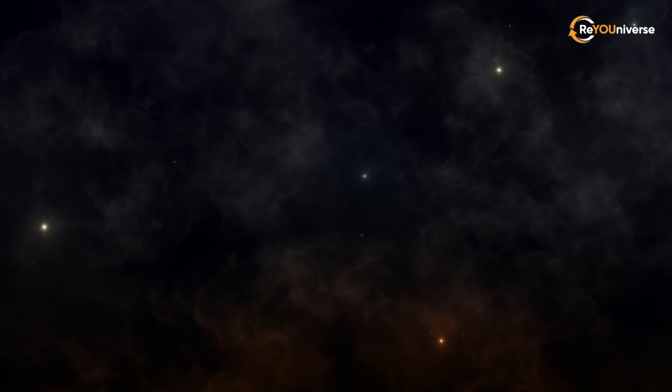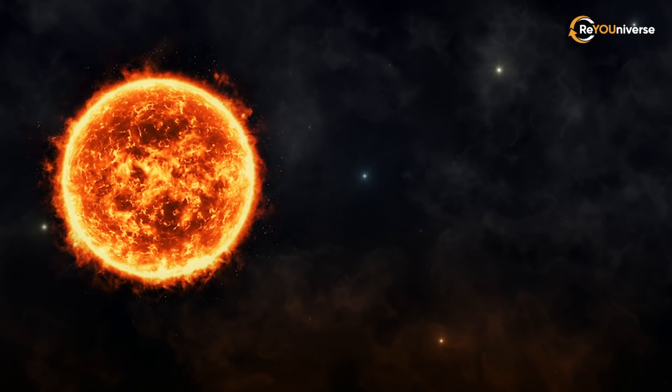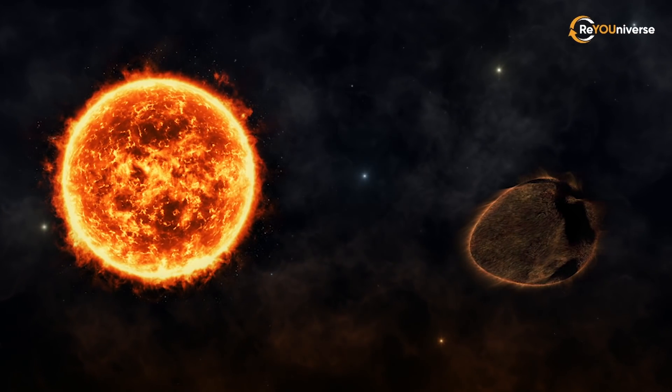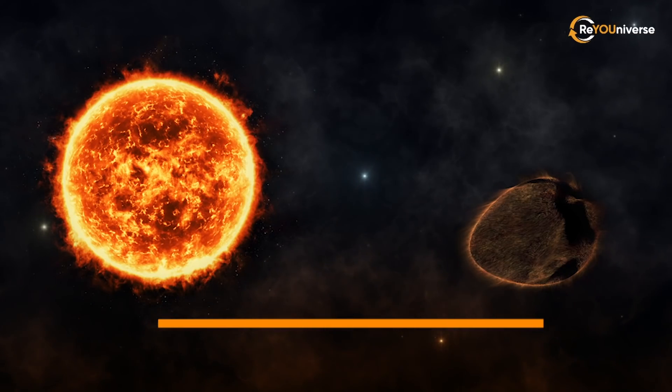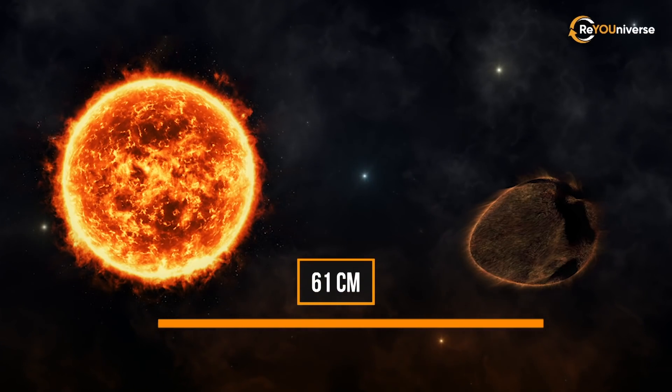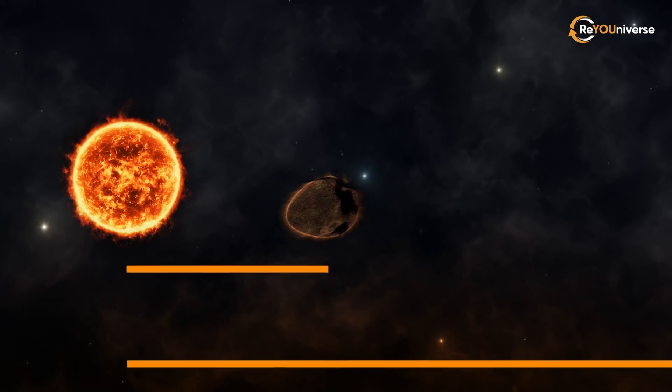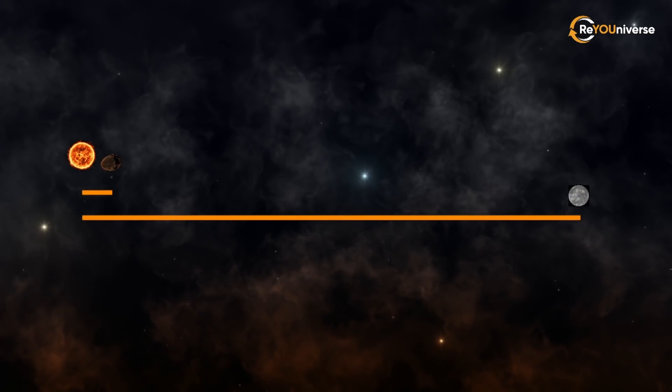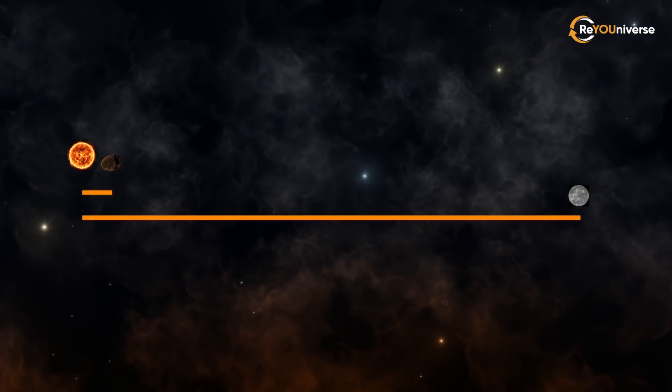Now, let's imagine we reduce stars and planets in scale. If the Sun were to be the size of a regular basketball, then this exoplanet would be 61 centimeters away from it, and Mercury almost 10 meters away. Keep in mind that this is the closest planet to the Sun.